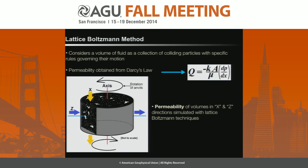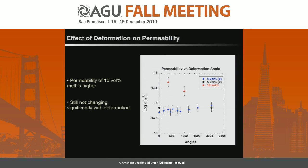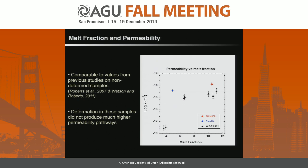We've done lattice Boltzmann modeling to actually measure the permeability and how it changes with deformation. This shows log permeability against the deformation angle. The basic result is that deformation up to the levels we've been able to apply has not had a large effect on the actual bulk permeability of the sample, even though there are significant textural changes. We have two samples — five-volume percent melt and ten-volume percent melt. The ten-volume percent melt is more highly permeable, but not by much. Compared to older experiments on similar samples under static conditions, the changes in permeability haven't been substantial.